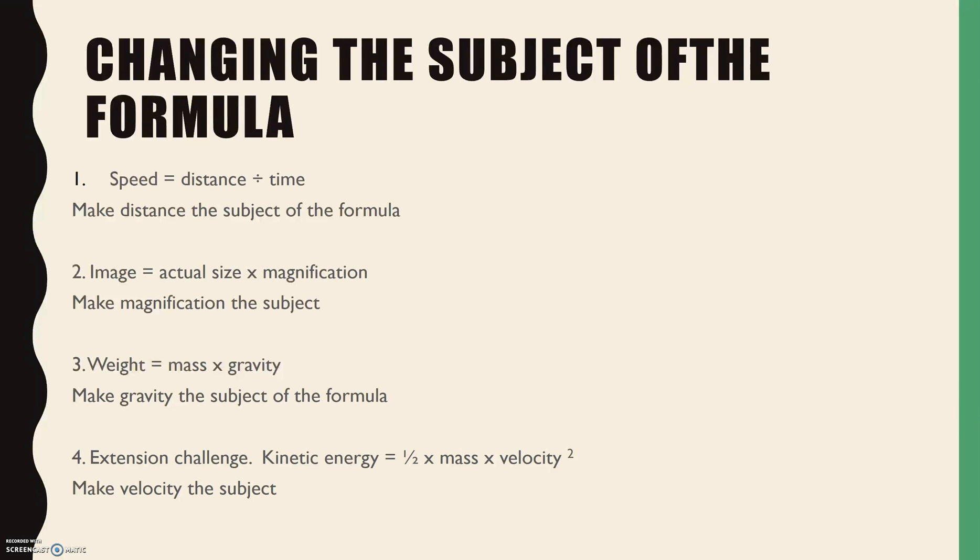Okay, so let's have a look and make sure you mark as you go through. Making distance the subject, you should have got distance equals speed times time. To make magnification the subject, image divided by actual. Gravity equals weight divided by mass. And then the hard one, so more elements to it and you had to the power of two, which we hadn't talked about, the inverse being square root, but you should know that for maths. If you did get onto the extension, well done. And if you did get this as your answer: velocity equals the square root of kinetic energy divided by a half times mass.